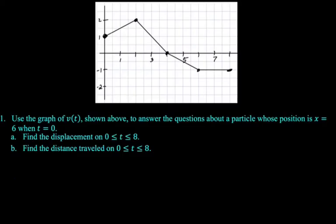Use the graph of v(t) shown above to answer the questions about a particle whose position is x equals 6 when t equals 0. Find the displacement on 0 to 8.